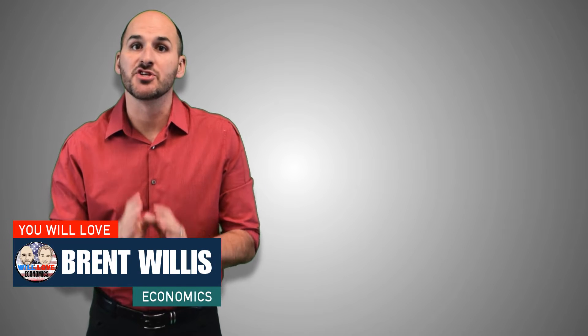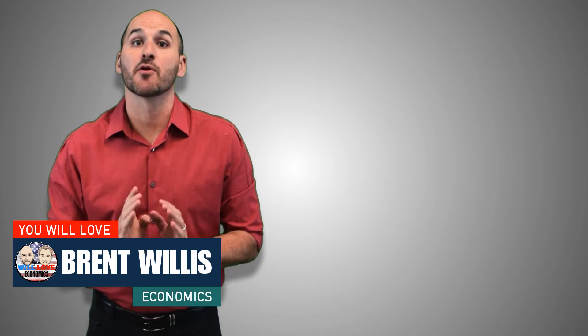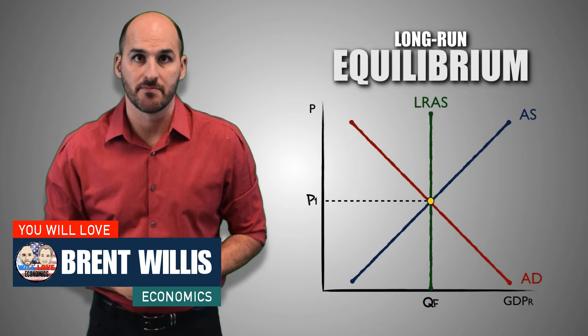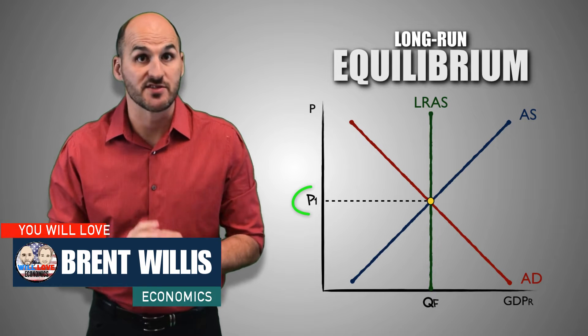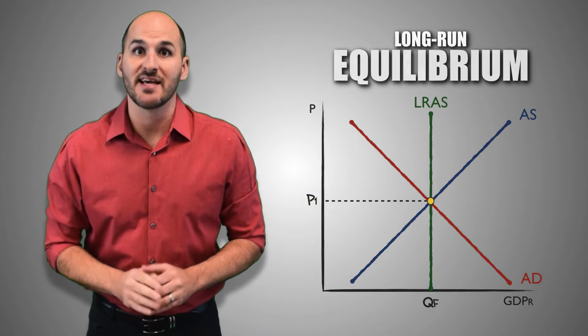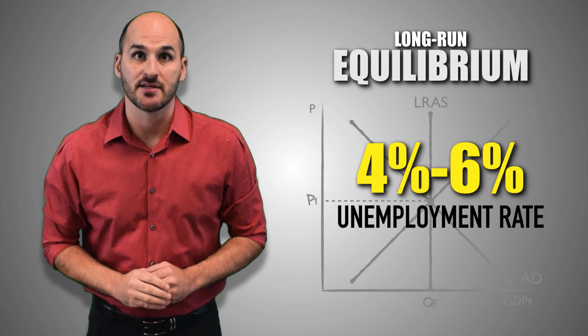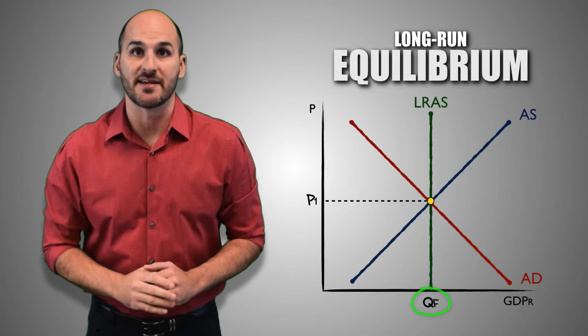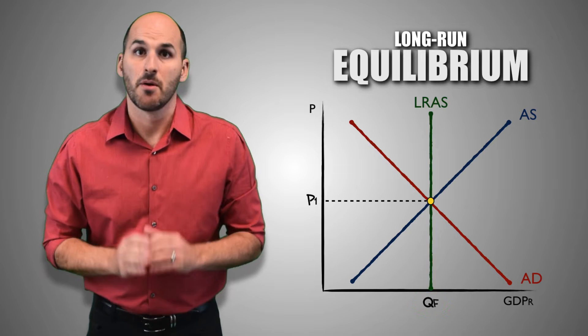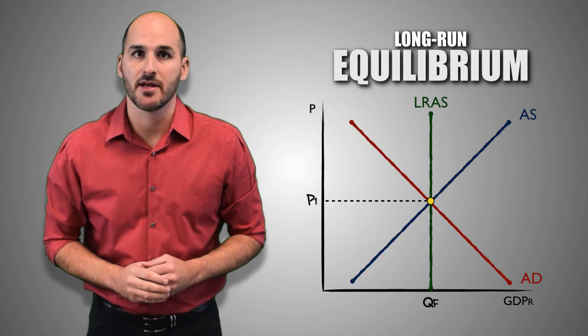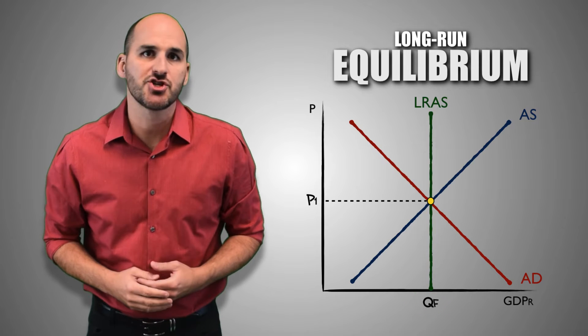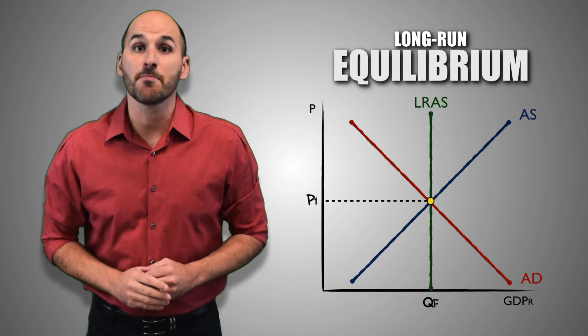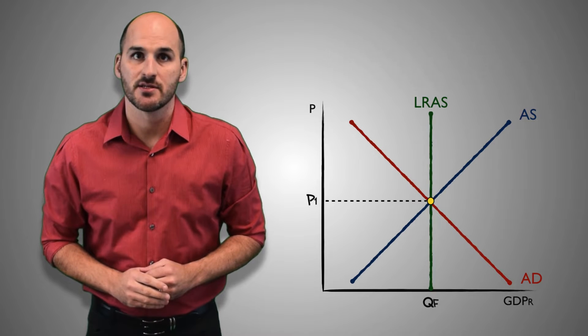The aggregate economy is always fluctuating, but one thing is certain: conditions are perfect when it rests at long-run equilibrium. Prices are stable, the unemployment rate is at its natural rate of 4-6%, and the economy is producing real GDP at full capacity. But fundamental changes in aggregate demand can create GDP gaps, causing imperfect economic conditions to exist.